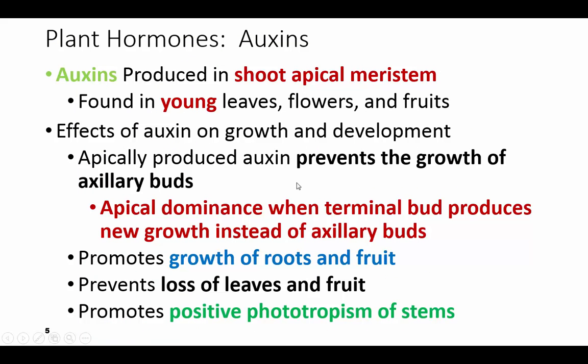Now we're going to talk about the five major growth hormones that are found in plants and describe their effects on growth and development. This is objective 28.